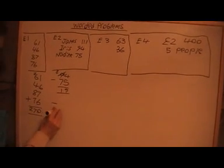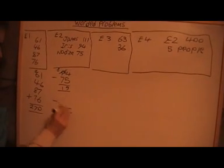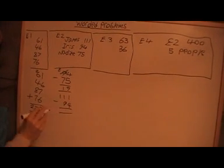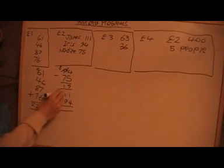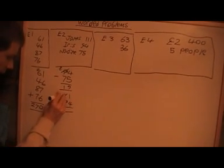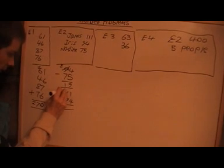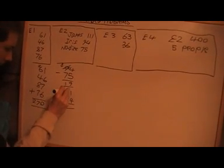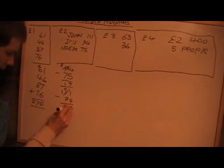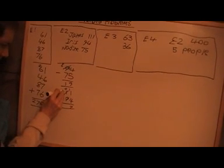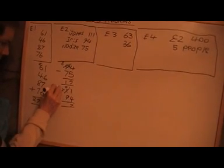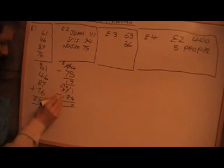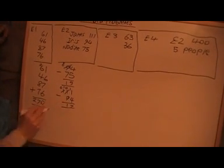Next one — I need to borrow again. So I've got 0 there, I've got 11 there, that's 7. This one I can't do so I borrow. I've got 0 there, now I've got 10 there, so that's 17. 18.